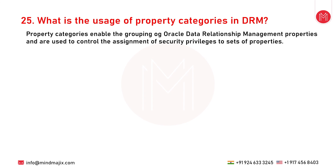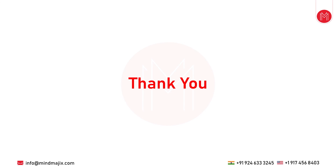The last question is: what is the usage of property categories in DRM? Property categories enable the grouping of Oracle DRM properties and are used to control the assignment of security privileges to sets of properties. Core properties available by default are only located in a single property category. Custom properties created by application administrators can be associated with multiple property categories.